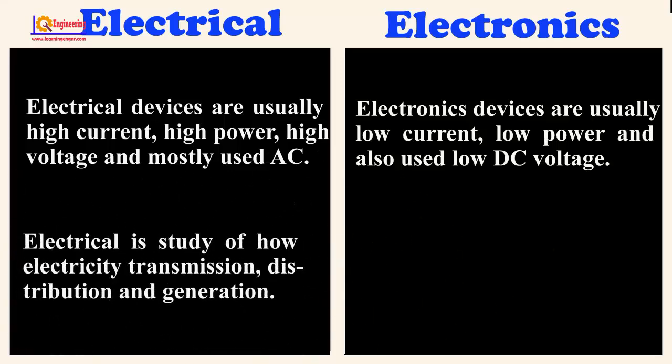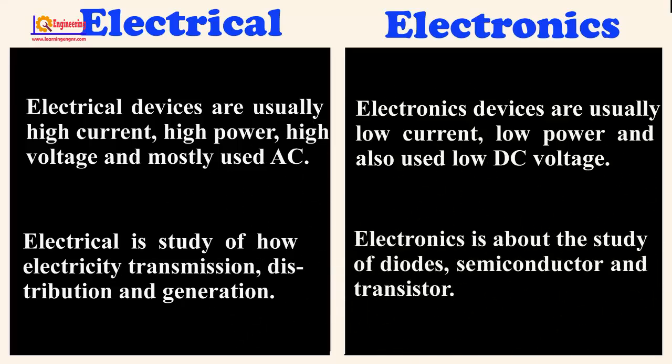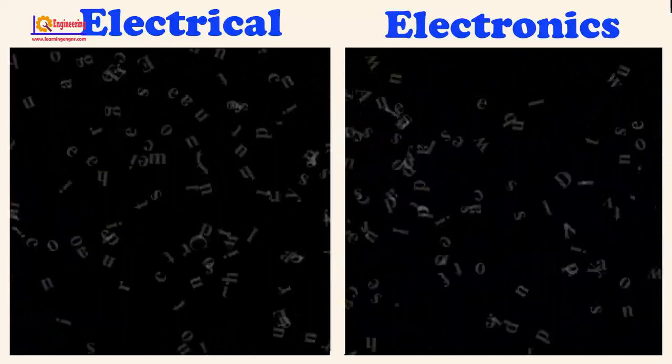Electrical is the study of how electricity is transmitted, distributed, and generated. Electronics is about the study of diodes, semiconductors, and transistors.